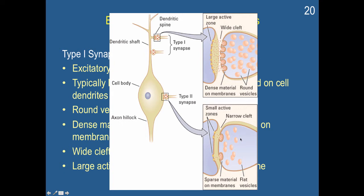The type two synapse, you have a much narrower cleft, these sort of smaller flat vesicles, much less dense material on the presynaptic membrane, so fewer neurotransmitters being released, and a smaller active zone, so fewer receptors to receive those transmitters.